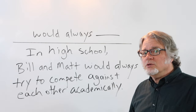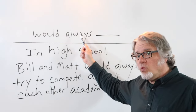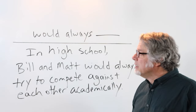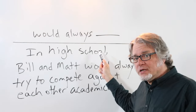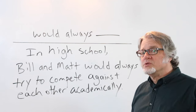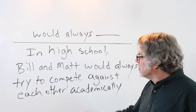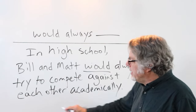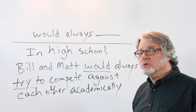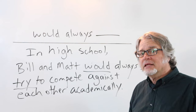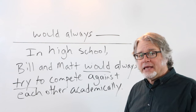In sentences that use WOULD to talk about the past, you'll often see ALWAYS appear before the main verb. 'In high school,' — there's a comma because this is a prepositional phrase — 'Bill and Matt would always try to compete against each other academically.' Here's WOULD, then the adverb ALWAYS, then the main verb. This helps reinforce the idea that it happened again and again.